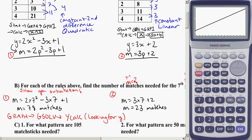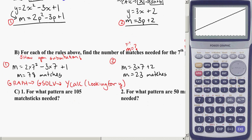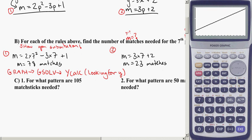So the next one we're going to look for is, here I've got a different problem for each rule. So for rule 1, for what pattern are 105 matchsticks needed? So reading that question carefully, the number 105 matchsticks, well that's going to be m is equal to 105.